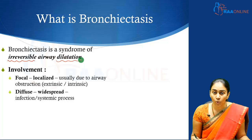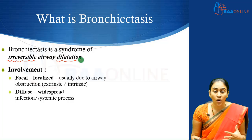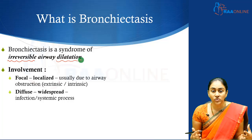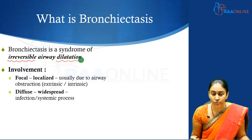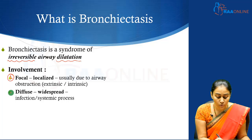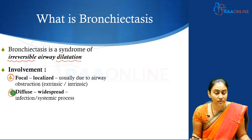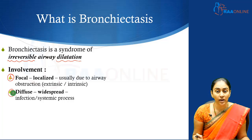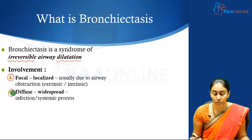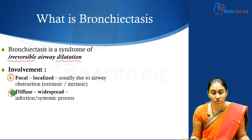The involvement may either be focal, where there may be localized areas of bronchiectasis. This is often seen in the context of airway obstruction, which can be from extrinsic factors like a lymph node or from intrinsic factors like a foreign body or a tumor. Or the bronchiectasis could be diffuse, where it is much more widespread involving all the lung fields, usually secondary either to an infection or a systemic process. Whenever you have focal bronchiectasis, always think about obstruction, which could be either extrinsic or intrinsic.